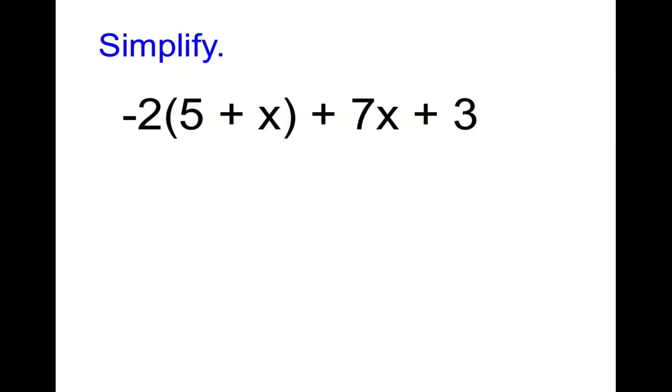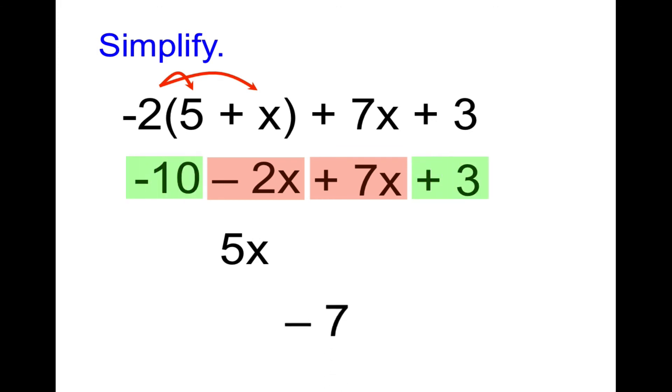In this one we can use the distributive property. That would be the first step. Before highlighting, before simplifying, we're going to use the distributive property. Negative 2 times 5 and negative 2 times x. Negative 2 times 5 equals negative 10. Negative 2 times 1x equals negative 2x. Then we copy down the plus 7x plus 3. Now that there's no parentheses, this would be the time to highlight the like terms, starting with the variable terms. I have negative 2x plus 7x, that equals 5x. Then the constants come last, negative 10 and plus 3 equals negative 7. You can see how important it is to know your integer rules for simplifying variable expressions.